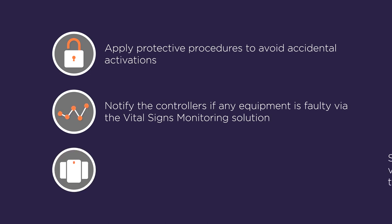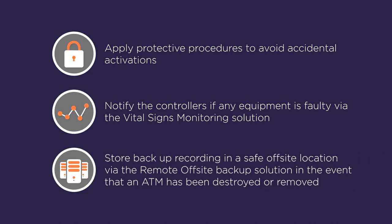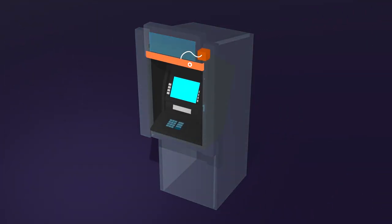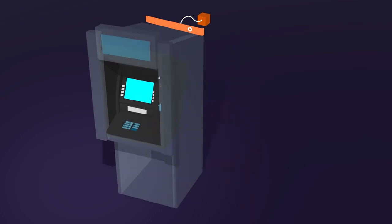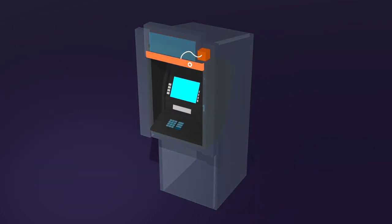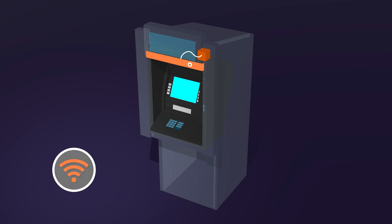The system can apply protective procedures to avoid accidental activations, notify the controllers if any equipment is faulty via the vital signs monitoring solution, and store backup recordings in a safe off-site location via the remote off-site backup solution. In the event that an ATM has been destroyed or removed, the solution is mobile, which allows it to be transferred from one ATM to another. It can also integrate with existing systems or solutions and can run off a local network or via a 3G or 4G connection.